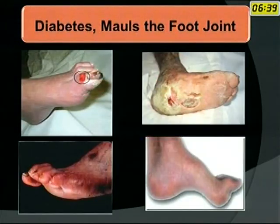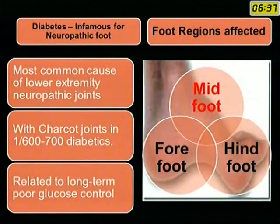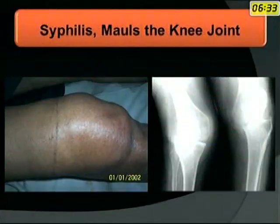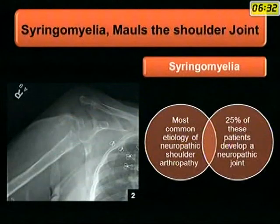Diabetes is known to mould the foot joint — it is known to affect all parts of the foot, mainly the midfoot. Syphilis moulds the knee, and syringomyelia moulds the shoulder joint.